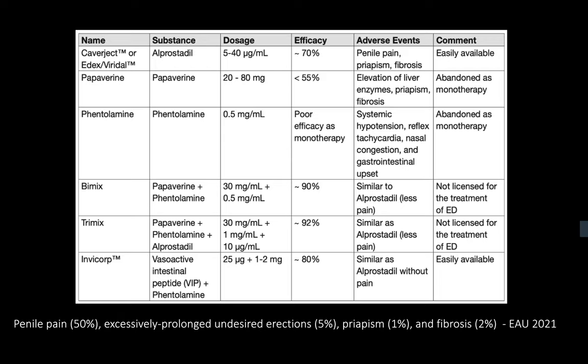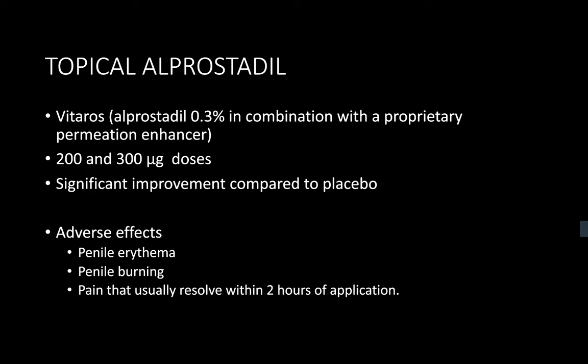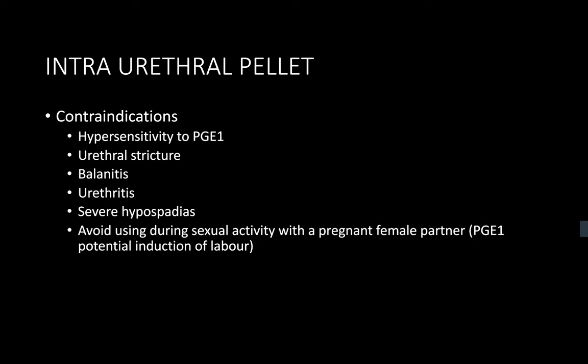What are some of the side effects of intraurethral pellets? The main side effects are penile and urethral pain in approximately 33% of patients, and also difficulty in administration. What are the contraindications to the use of MUSE? These include meatal stenosis and known urethral stricture. A relative contraindication would be persistent dysuria.